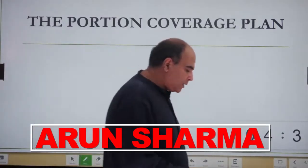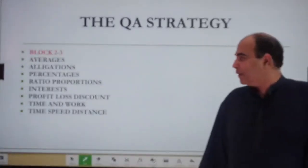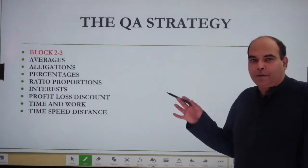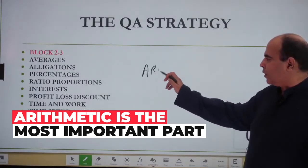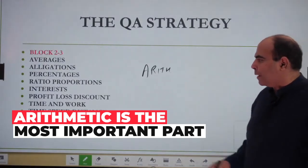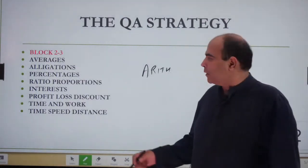What should be the portion coverage plan is the next part. If you look at the last three to five years of CAT, Block 2-3 of my book, which is basically arithmetic, has been the most critical part of the CAT paper. In the 34-question paper, the three-hour paper with one-hour QA section, you have had between 12 to 16 questions on Block 2-3 every year.